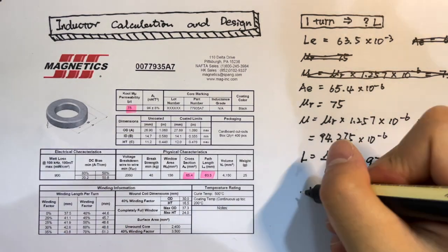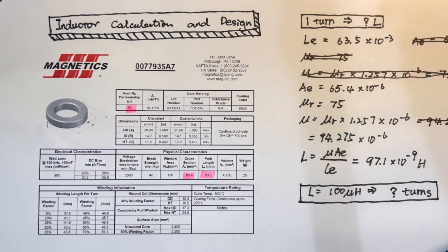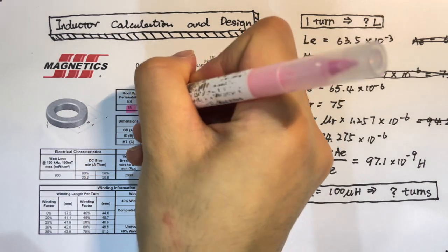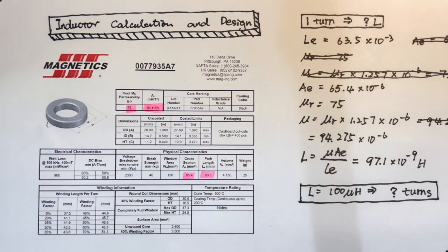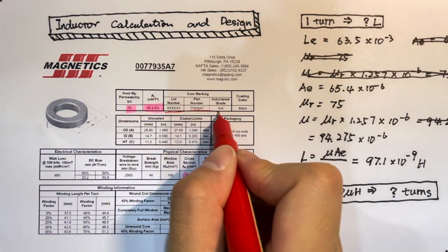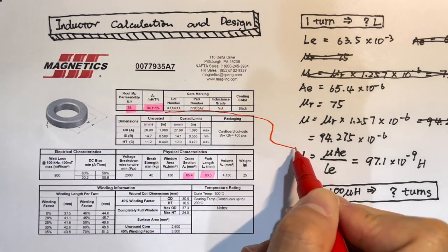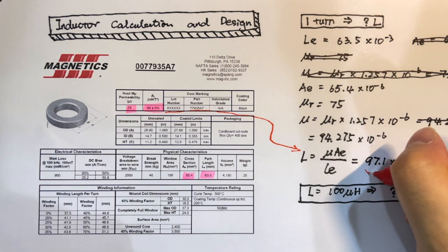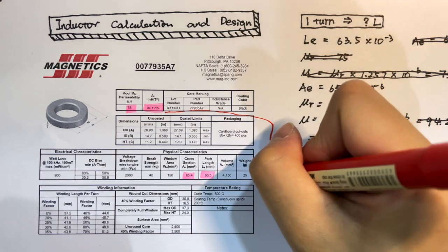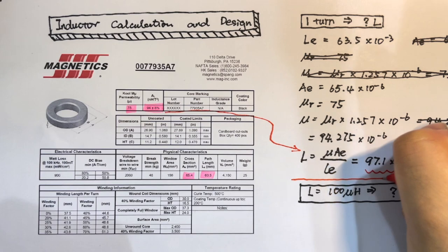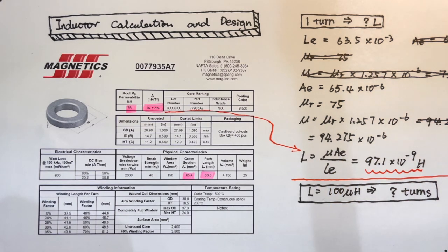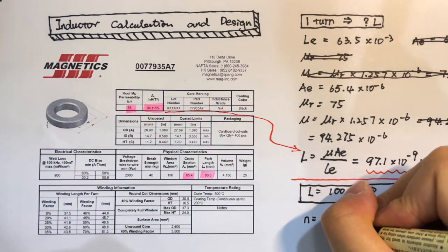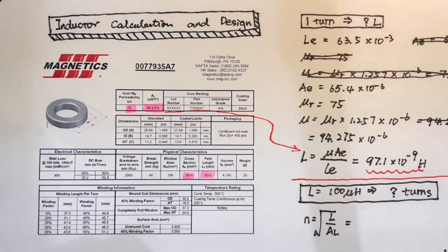But we actually don't need this long way to get this value. Here is the data sheet. We have AL is the value of one turn inductance. It's very close to the value we calculated. So to design a 100 microhenry inductor, we can directly use N equals to square root of L divided on AL.